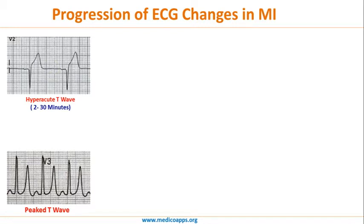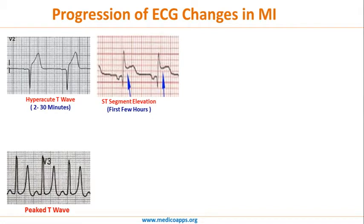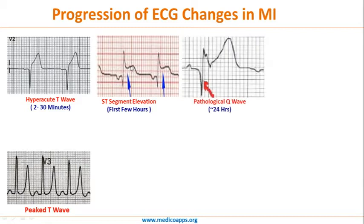The next change is ST segment elevation, which happens in the first few hours. We can see the isoelectric line clearly, with a proper ST segment elevation above it. The next change is a pathological Q wave, which typically happens within 24 hours. The pathological Q wave does not happen immediately — it appears once the MI has been present for more than 24 hours.